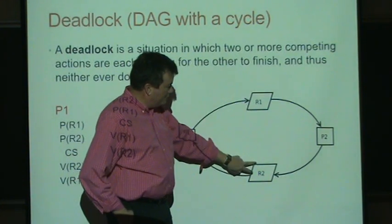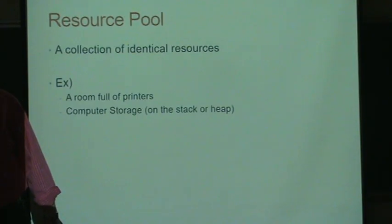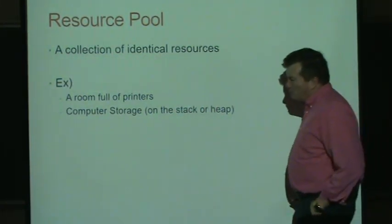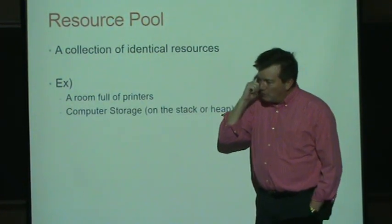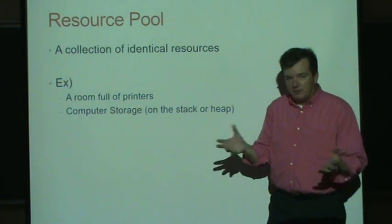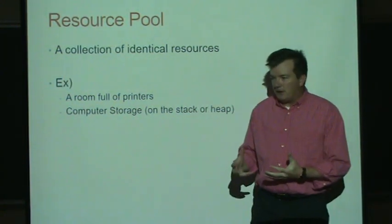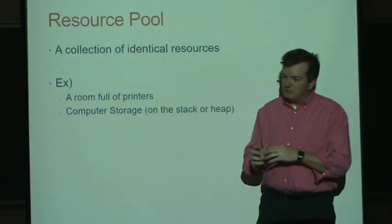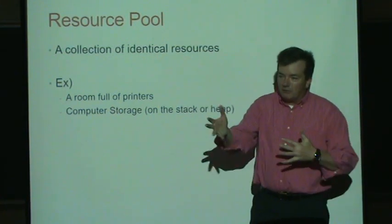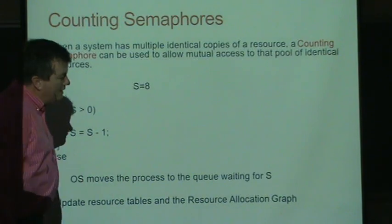The statement that a cycle means deadlock is true when resources are unique. But an operating system can have pools of common resources. Suppose you have a room full of identical printers and you just need one. If there are eight and one is available, the OS assigns one to you. Just because you have a printer doesn't mean you're blocking everyone else, since the other seven could still be returned and freed up. So now there may not be a deadlock even if there's a cycle.